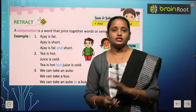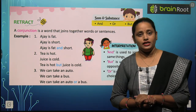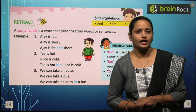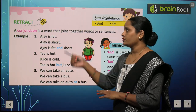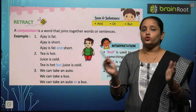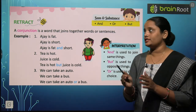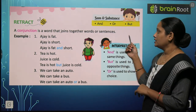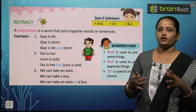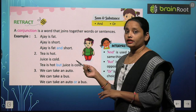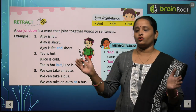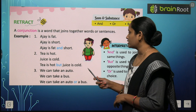These words — and, or, but — are called conjunctions. A conjunction is a word that joins two words or two sentences with each other. Conjunction का क्या काम होता है? ये दो words को या फिर दो sentences को आपस में join कर देता है।